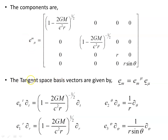The tangent space basis vectors: recall e_mu is the coordinate basis vector, multiplied by the normalization scalar. For Schwarzschild, e_0t, e_1r, e_2 theta, and e_3 phi each follow this pattern. These are our tetrad basis vectors in the tangent space. Remember: the index m labels the tetrad, while mu labels the coordinate basis. We act on the coordinate basis vectors with normalization scalars to produce the tetrad basis vectors, and their components form the tangent space matrix.